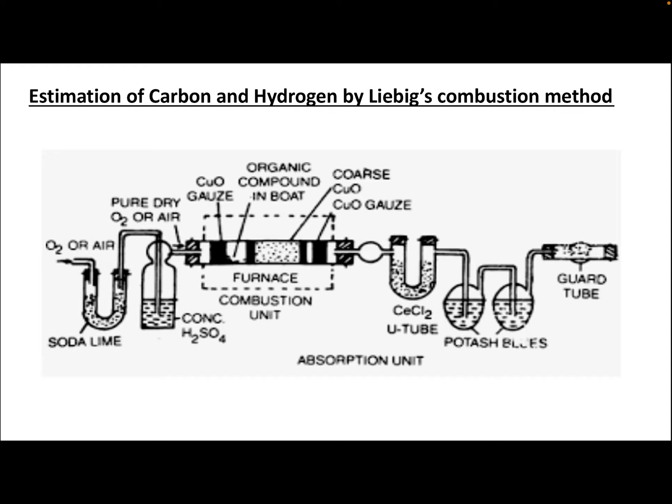In the apparatus, there is a U-tube containing soda lime. Pure dry oxygen is passed through it. Copper oxide gauze is present, and the organic compound is placed in a boat shape where combustion and heating take place. The gases CO₂ and H₂O come out — CO₂ is absorbed in the potash bulb and H₂O in the calcium chloride tube. Before and after the experiment, we weigh the potash bulb and calcium chloride tube to find the weights of CO₂ and H₂O absorbed.